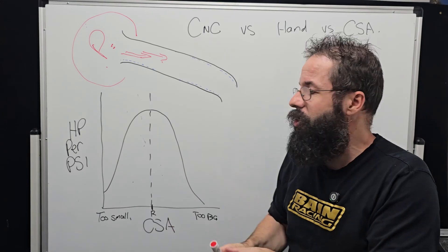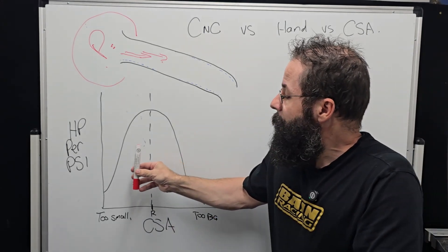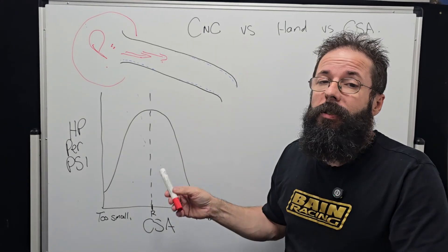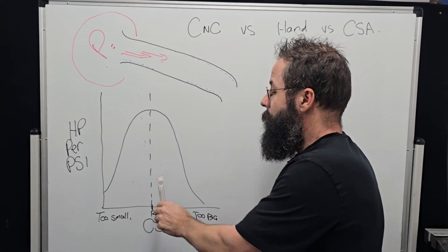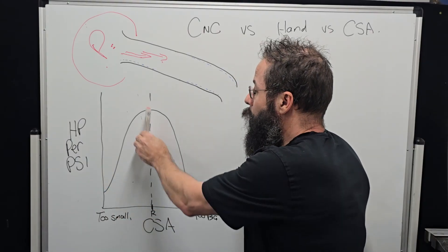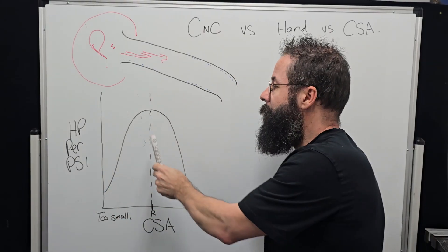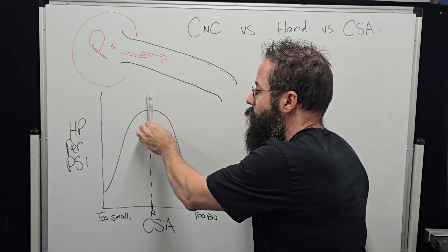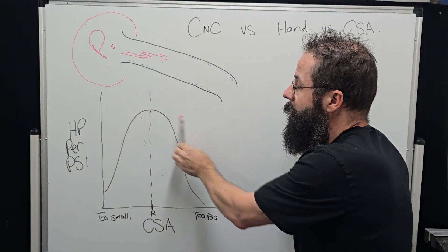It very much does influence, and the CSA—if we just talk averages for now, not shapes—this is pretty much how it works in all engines. Optimal horsepower and torque where you want it: the CSA needs to be dead right.